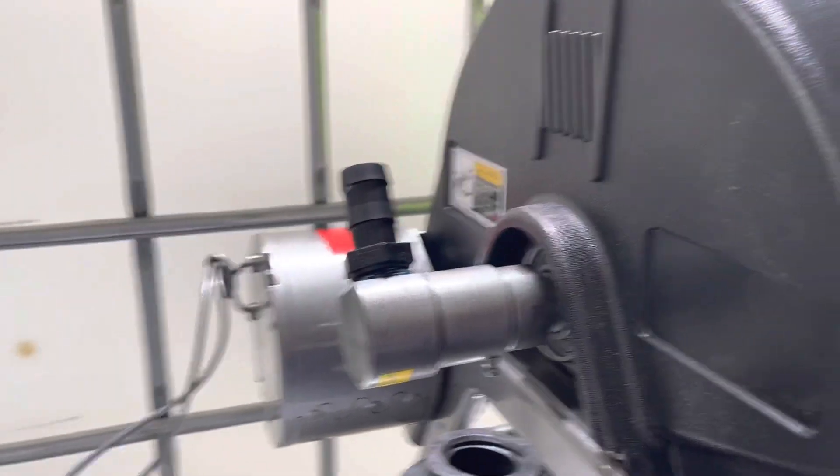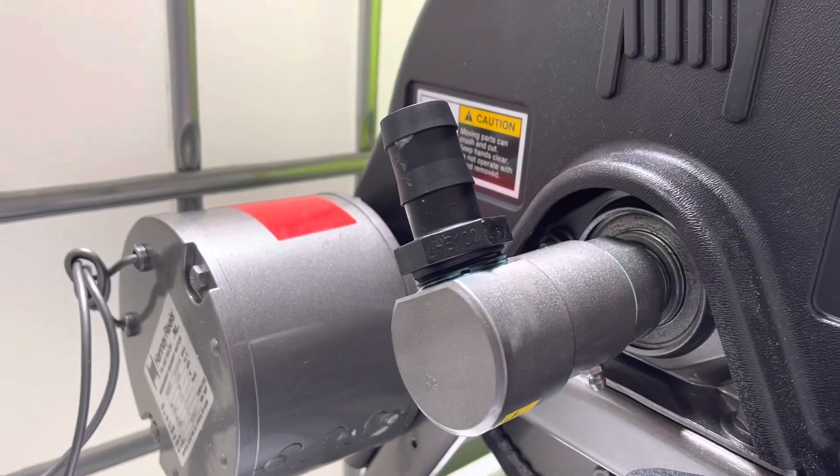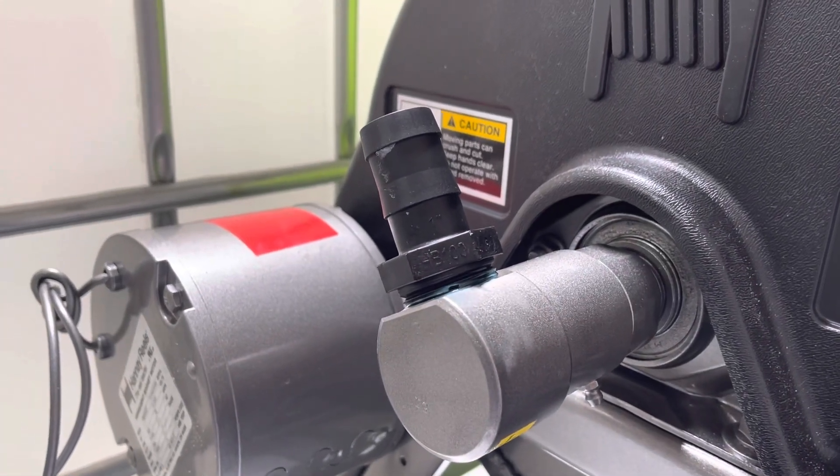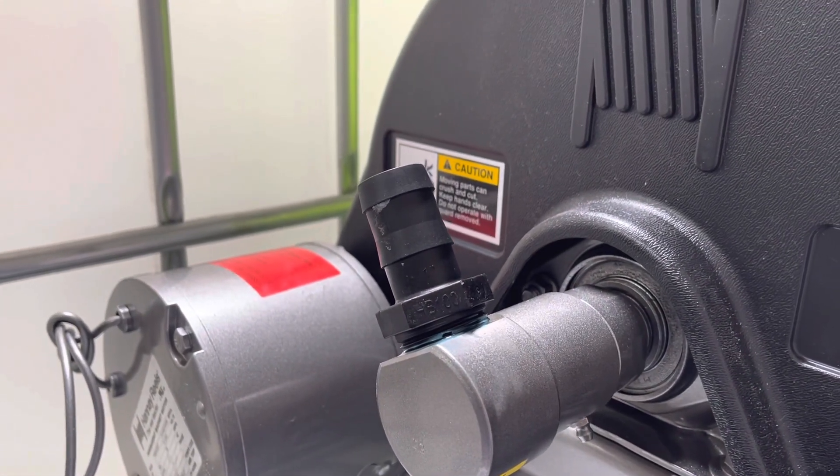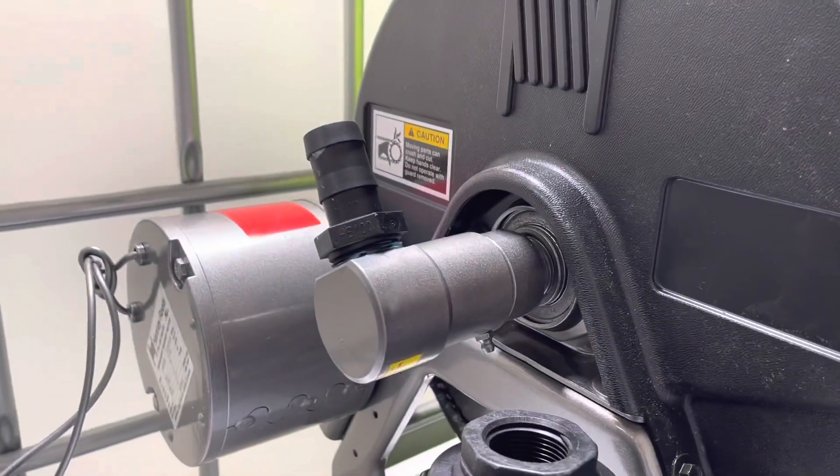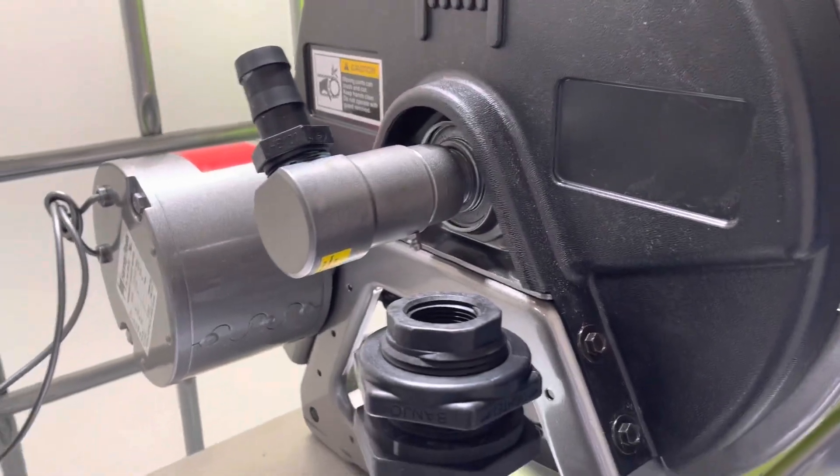...this is the Hanna hose reel. We have a one inch male thread to a one inch barb, and that's just gonna run right up there. We're gonna use one inch crush proof hose, and I'll show you what that looks like when we're all done.